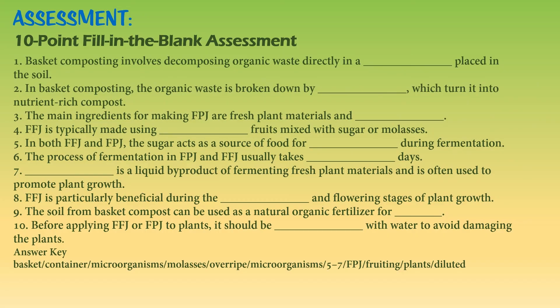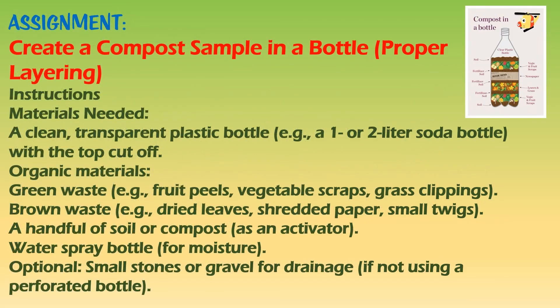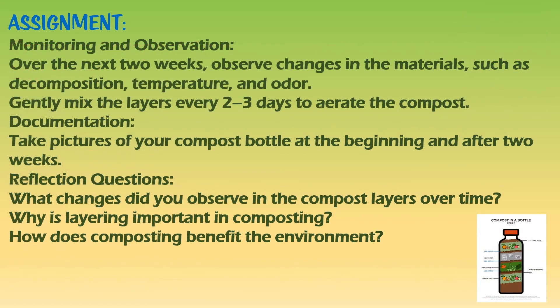For your assignment, you will create compost in a bottle. Start by getting a clear plastic bottle and cutting it in half. Add a layer of coarse material like small twigs and stones at the bottom for airflow. Then layer green waste (vegetable scraps) and brown waste (dried leaves) alternately. Keep the compost moist but not too wet, and cover the bottle. Place it in a shaded spot and turn it occasionally. Observe the process and document the changes as the materials decompose.